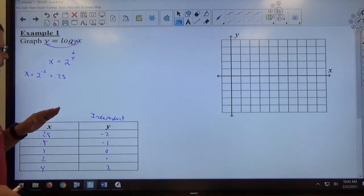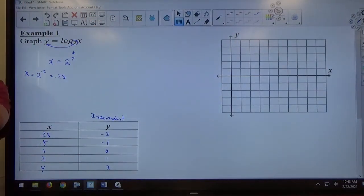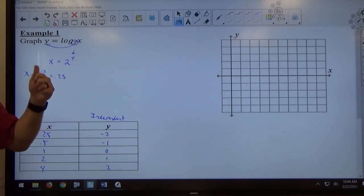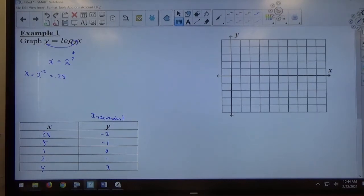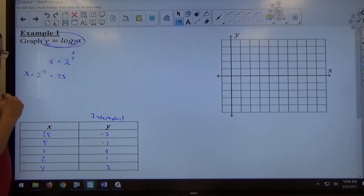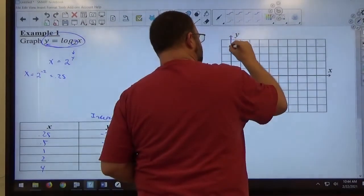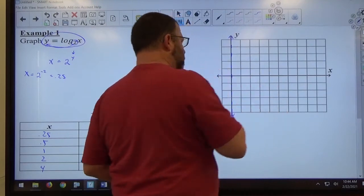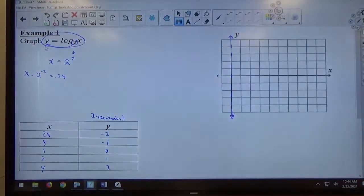So, where again, an exponential function y equals some number to the x power has a horizontal asymptote, the exponential function with x equals 2 to the y power is going to get a vertical asymptote. Again, this was created by a logarithmic. So, when I get a logarithmic equation, I typically get a vertical asymptote. The asymptote is going to be x equals 0. I always graph the asymptote first so that I know my boundary, the graph is not going to cross that.